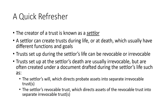Trusts that are set up during the settlor's life can be revocable or irrevocable. However, trusts that are set up at the settlor's death are pretty much always irrevocable because the settlor is deceased — they're no longer around to revoke that trust. The catch is that trusts created at death are usually established under some document drafted during the settlor's life, such as the settlor's will, which might direct probate assets into separate irrevocable trusts, known as testamentary trusts.